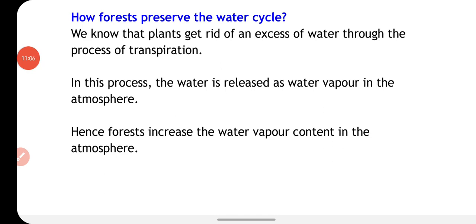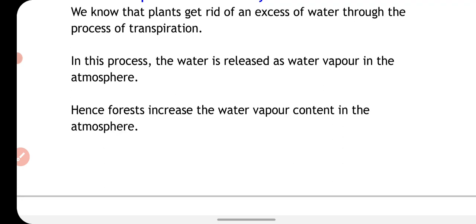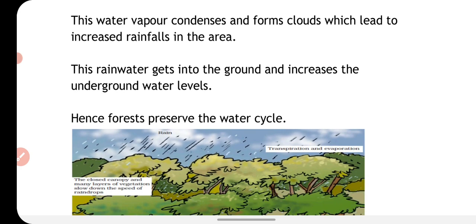How do forests preserve the water cycle? Plants get rid of excess water through the process of transpiration. This evaporated water rises into the atmosphere, forms clouds, and when condensed falls back to earth as rainfall. Hence forests help preserve the water cycle.